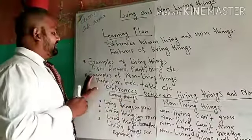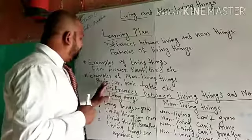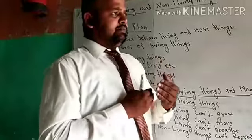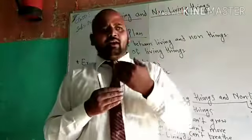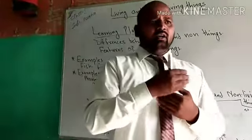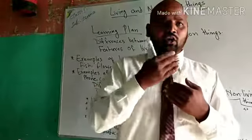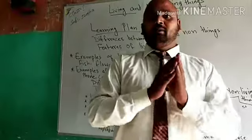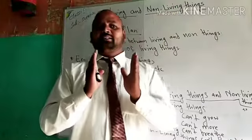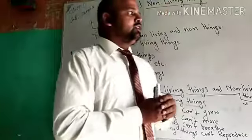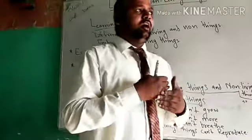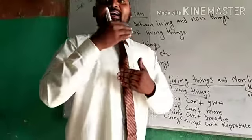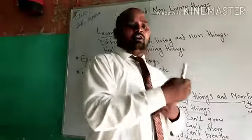Non-living things के examples: phone, car, book, table — यह सब examples हैं जो हमारे environment में हैं। अब living things और non-living things में कैसे पता लगाएंगे? तो कुछ characteristics को अगर हम याद रखते हैं, तो इससे हमें मालूम चल जाएगा कि यह living thing है और यह non-living thing है।